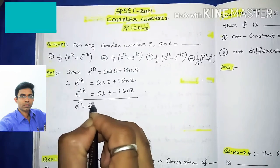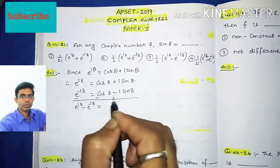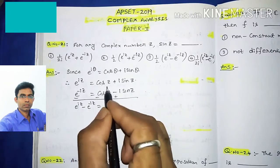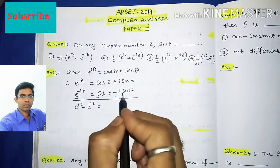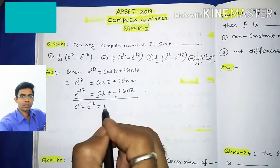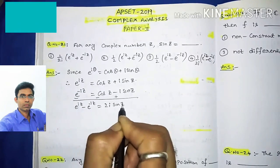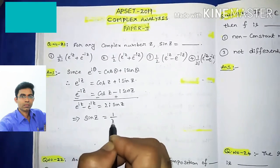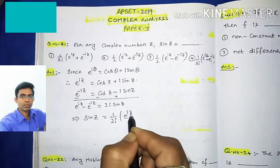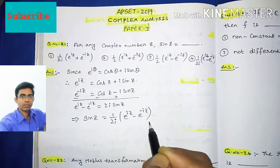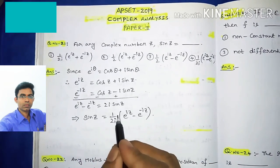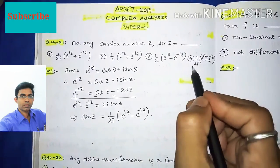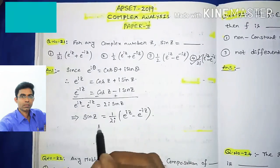By subtracting these two: e^(iz) - e^(-iz) = (cos z + i·sin z) - (cos z - i·sin z). The cos z terms cancel, leaving 2i·sin z. Therefore sin(z) = 1/(2i) · (e^iz - e^(-iz)), which is option 4.